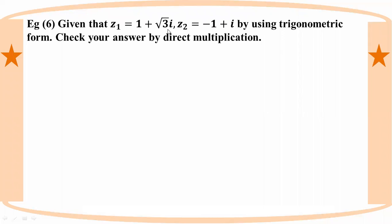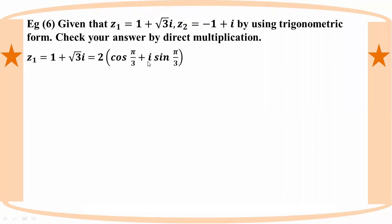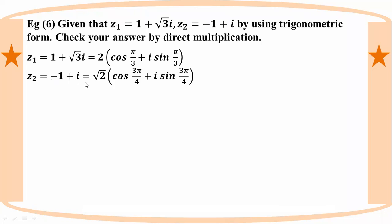One plus root 3i — this is complex number z1. We convert: z1 equals 2 into cos(π/3) plus i·sin(π/3). And z2 equals minus 1 plus i, which gives complex number z2 equal to root 2 into cos(3π/4) plus i·sin(3π/4).